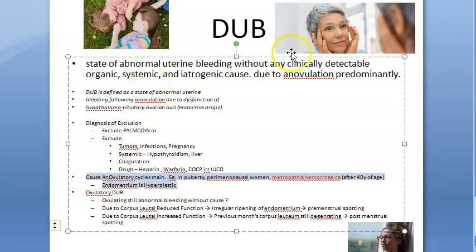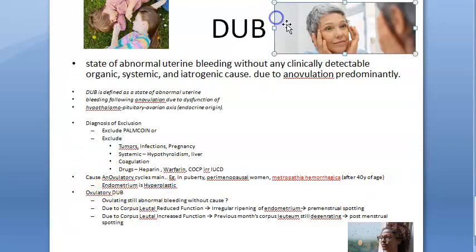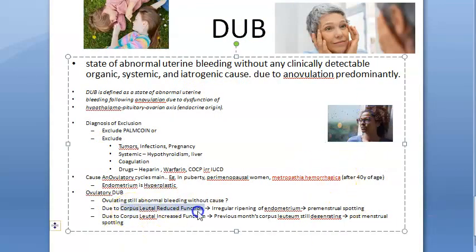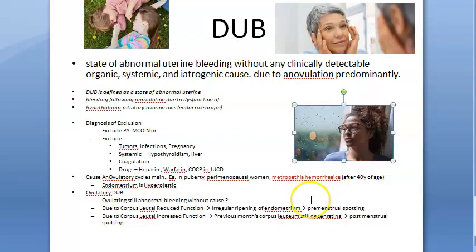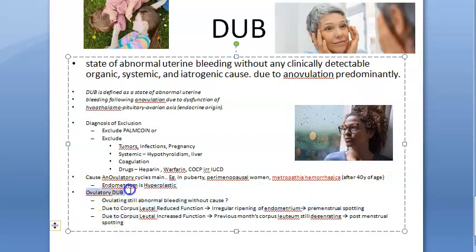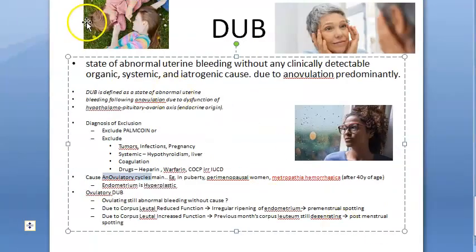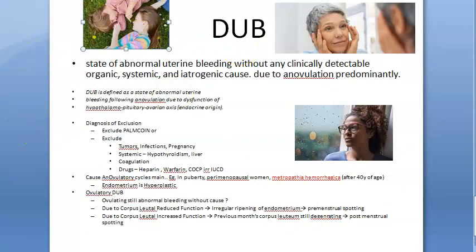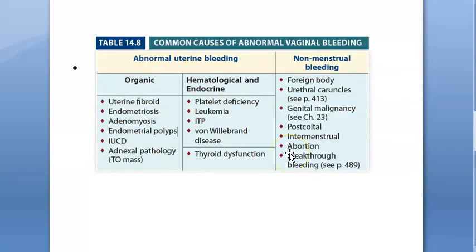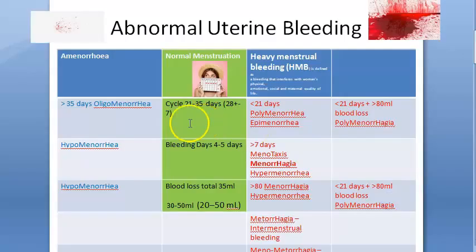Anovulatory cycles in puberty or perimenopause — or after 40 years of age, called metropathia haemorrhagica — can cause DUB. Ovulatory cycles can also cause DUB when there is reduced or increased corpus luteal function, i.e., corpus luteum dysfunction. Ovulatory DUB is less common, but it can still happen. Mainly remember anovulatory causes.